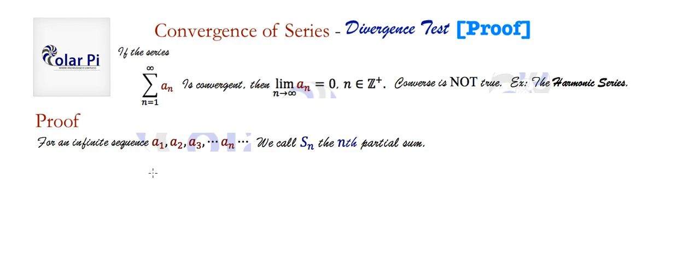And therefore, s_k would be like if we added a_1, a_2, a_3, all the way to a_k. You get the idea of partial sums.